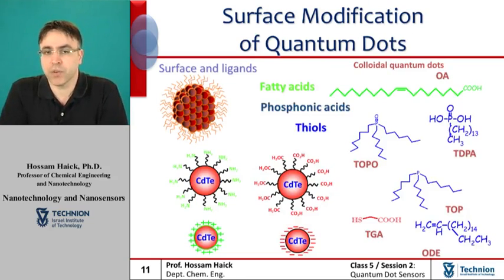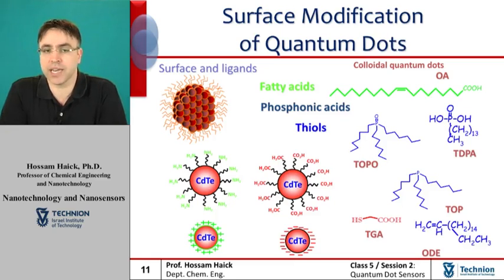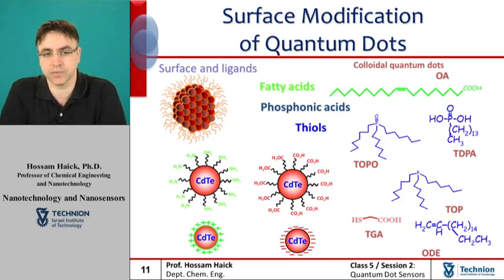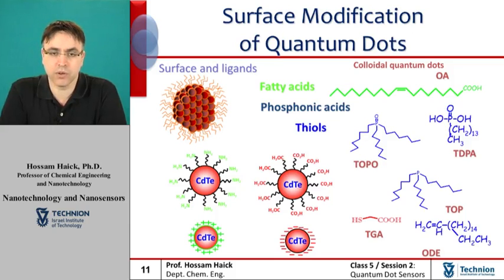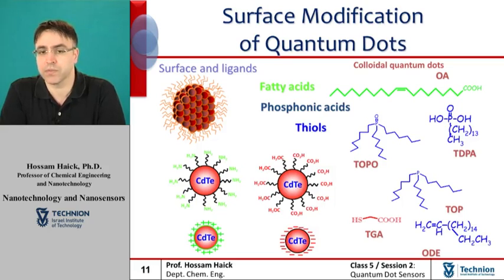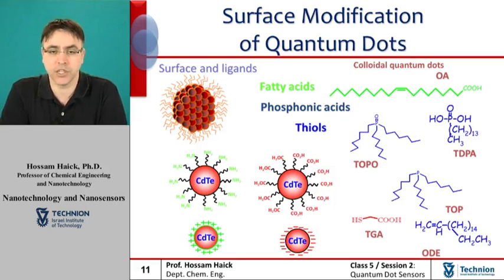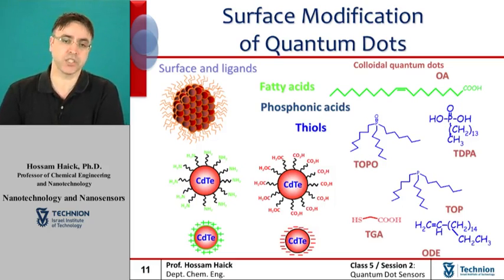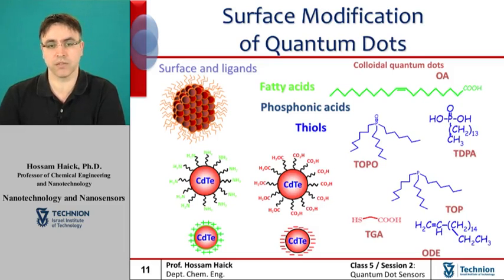Surface modifications of quantum dots make them water-soluble and suitable for biological applications such as molecular imaging and medical diagnosis. For example, organic molecules including derivatives of mercapto molecules, oligomeric ligands, phospholipids, dendrimers, and amphiphilic polymers have all been used for surface modifications of quantum dots, as reported in the scientific literature.